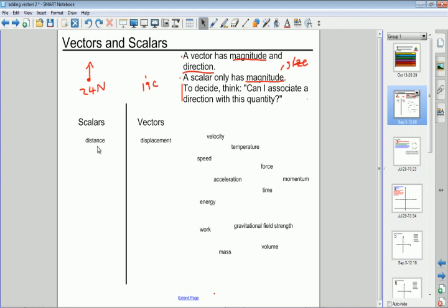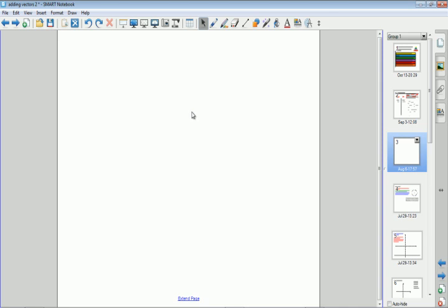Okay so distance is actually a scalar whereas displacement is a vector. And in order to give you an insight into the difference between them, let's talk about running. Running is the most pointless sport in the world if you think about it in terms of the vector nature of displacement.